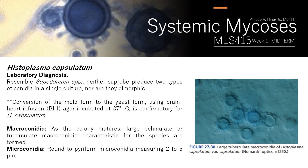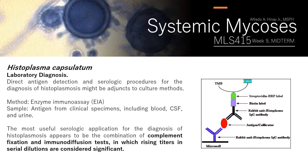For macroconidia characteristics, as the colony matures, large tuberculate macroconidia characteristic for this species are formed. For microconidia, round to pyriform microconidia measure 2 to 5 micrometers. For laboratory diagnosis, direct antigen detection and serologic procedures for the diagnosis of histoplasmosis are adjunct to culture methods — culture alone is very subjective, so it should be coupled with enzyme immunoassay (EIA), which identifies antigen in specimens including blood, CSF, and urine.